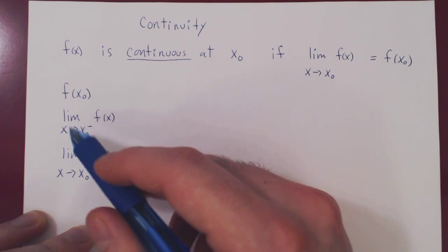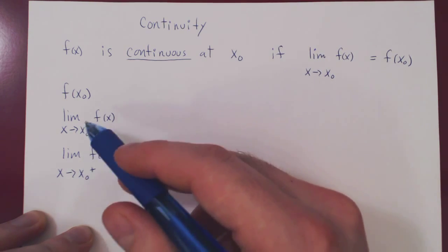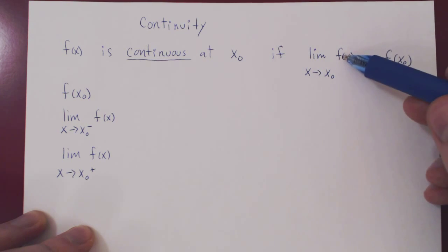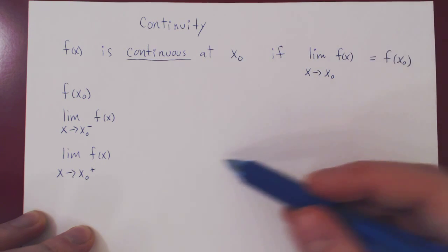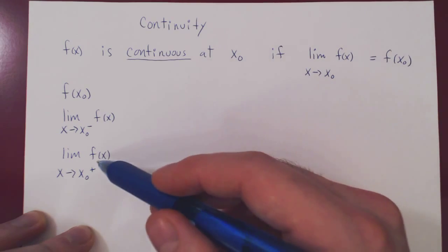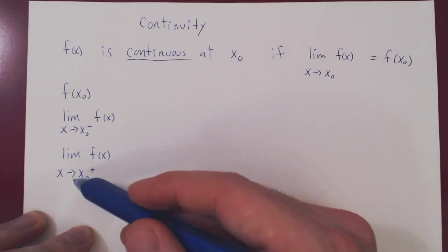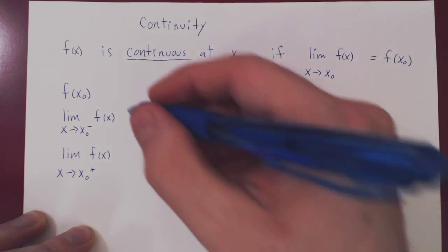Now, of course, you will only look at the limit from the left and from the right if there is a need. If you can evaluate the limit of f of x directly, do so. If not, always fall back on the limit from the left and from the right. So to have continuity, all of these three quantities must exist and be equal.